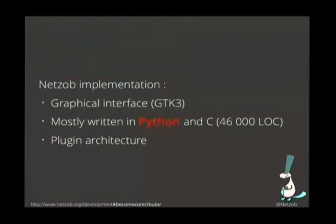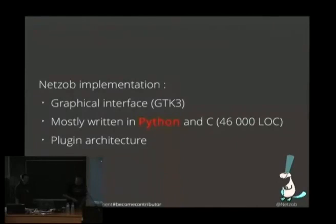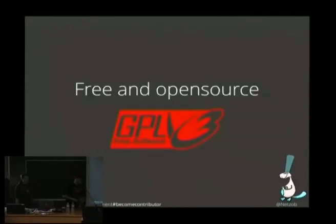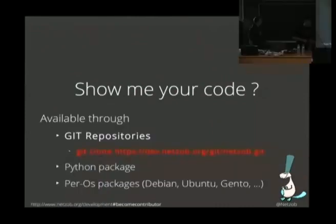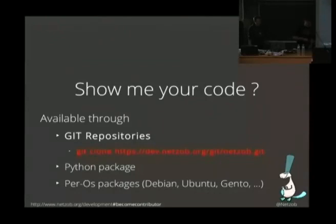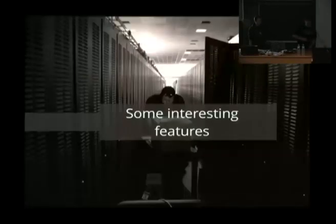Netzob is implemented in Python, uses a GTK3 graphical interface, and is composed of plugins so everyone can create a plugin and do their own things with Netzob. It's free, open source, and licensed under GPLv3. If you want to play with it, you can get the source code from GitHub or from our own repository. You can try the Python package or OS packages we provide for Debian, Gentoo, Ubuntu, and Arch Linux.